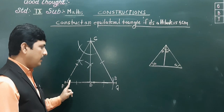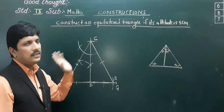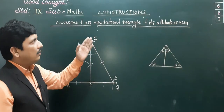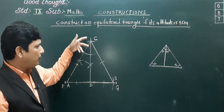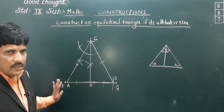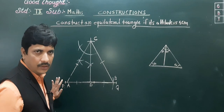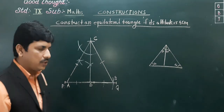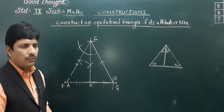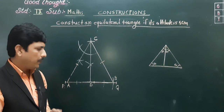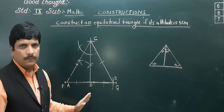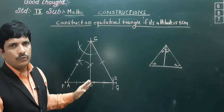We can verify: AC equals CB equals AB, and angle A is 60 degrees, angle B is 60 degrees, angle C is 60 degrees. This is the required equilateral triangle ABC according to the given conditions. The altitude CD is of the given length, 5 centimeter.